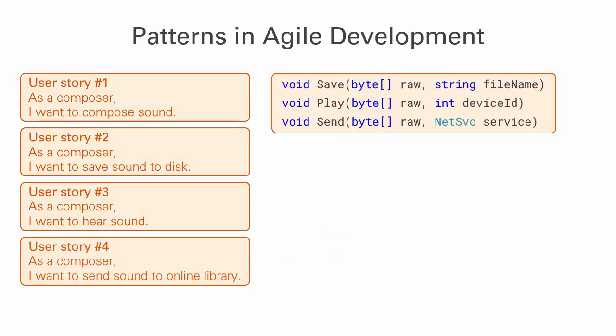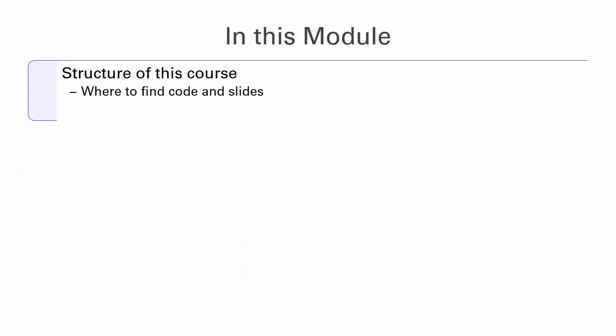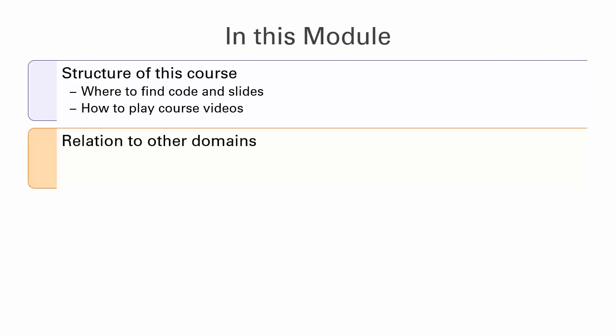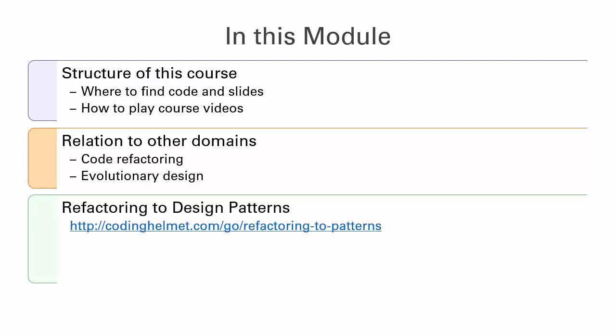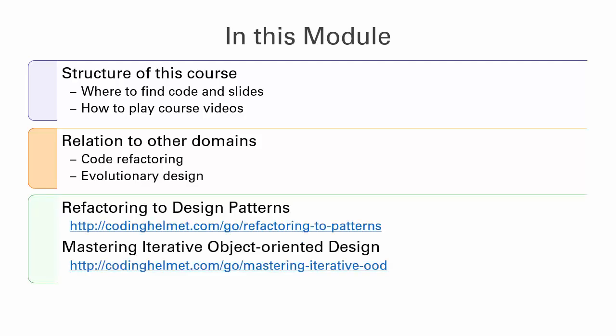After this long and detailed introduction, we are ready to start. In the rest of this module, I will tell you how the course is structured, where you can find the demo code and slides, and how to watch the course without losing track of what it is teaching. This course also relates to other courses I have already prepared. Since design patterns help evolve the design, they are naturally bound to two programming concepts: refactoring and evolutionary design. You can learn more on these from my courses Refactoring to Design Patterns and Mastering Iterative Object-Oriented Design. These three courses cover a large area of object-oriented design, which every programmer should master.